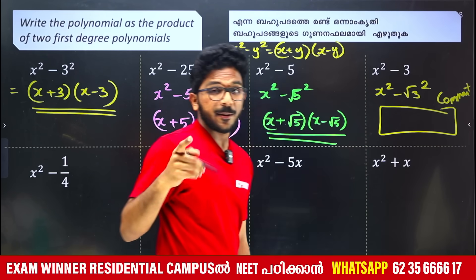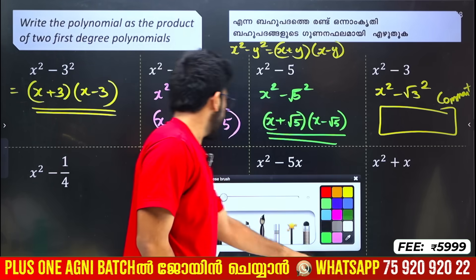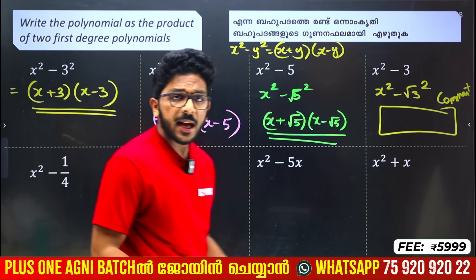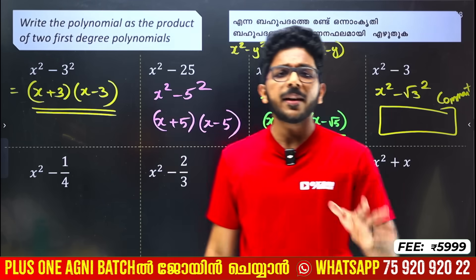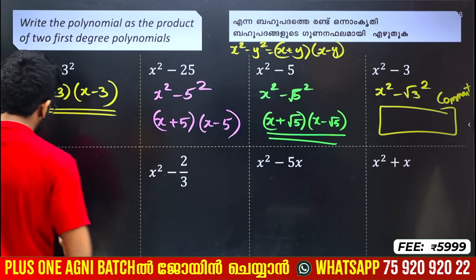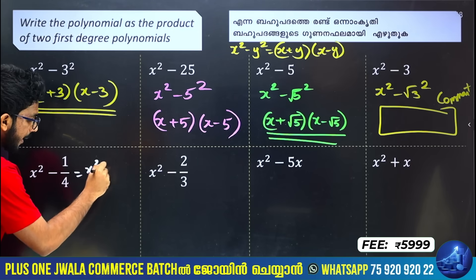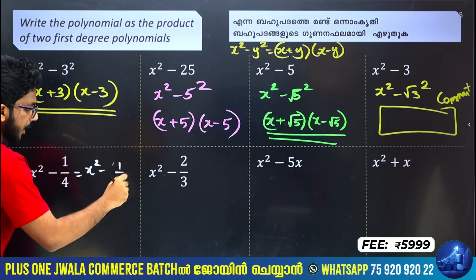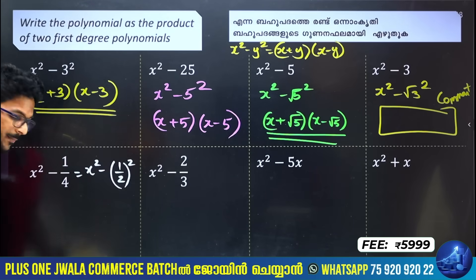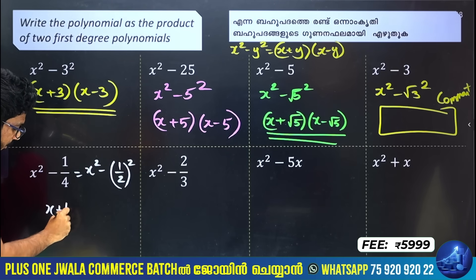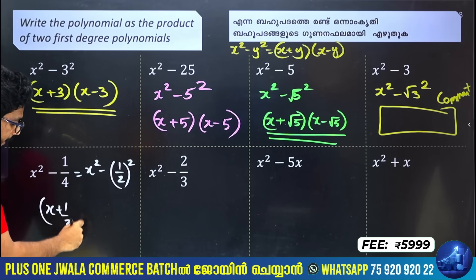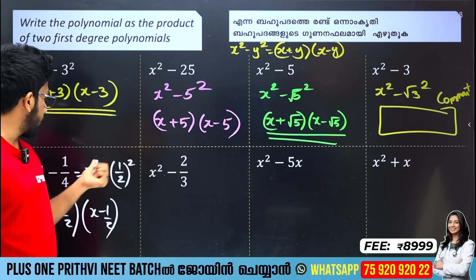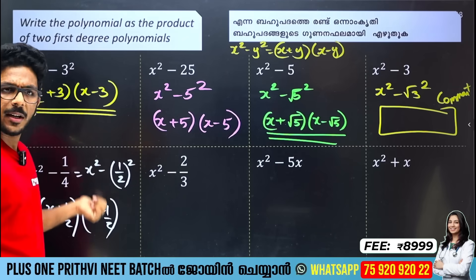x² minus (1/4)² whole square. See, 1/4 is a fraction. 1 into square is 1, 4 into square is 2. So 4 is the denominator. Here we have x plus 1/2 into x minus 1/2. This is the perfect square factorization.